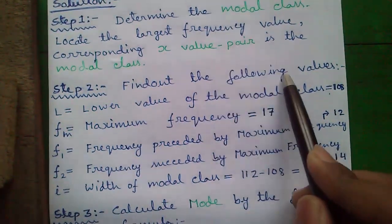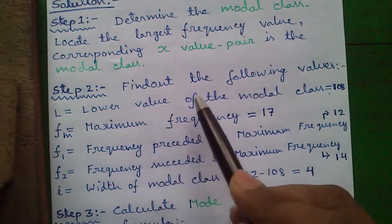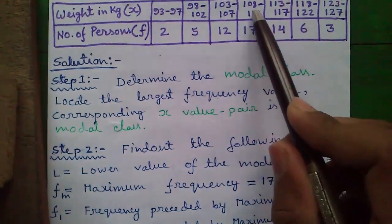Step 2: Find out the following values. L (capital L) equals the lower value of the modal class. The lower value of the modal class is 108.